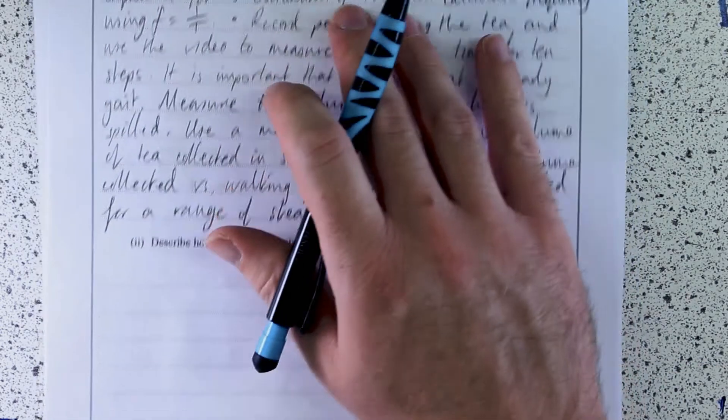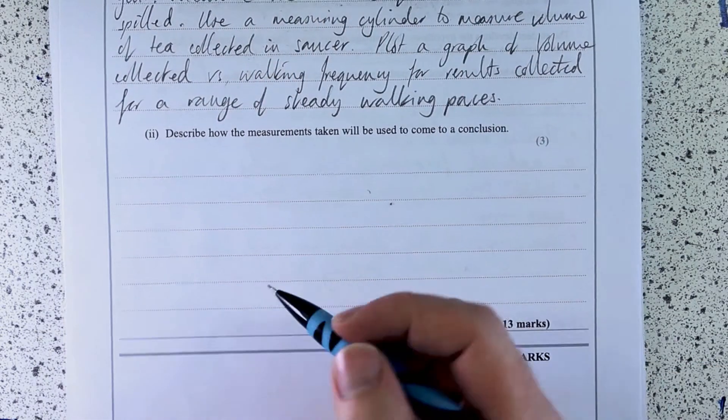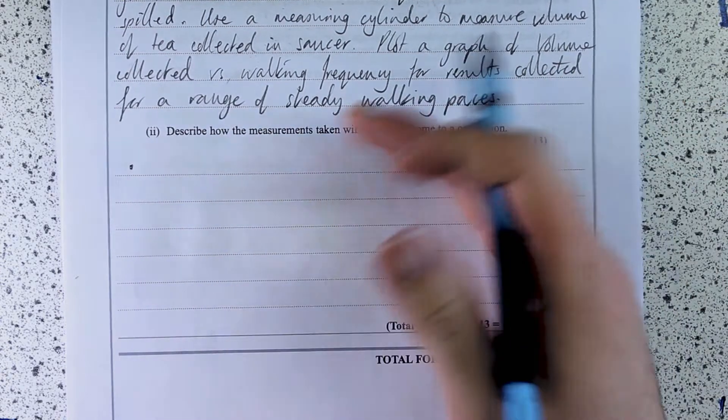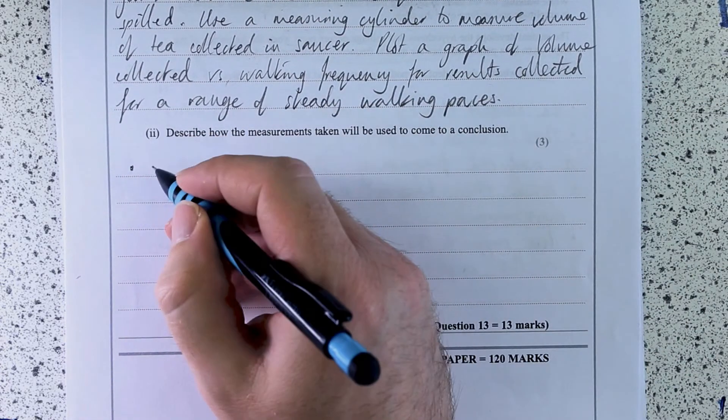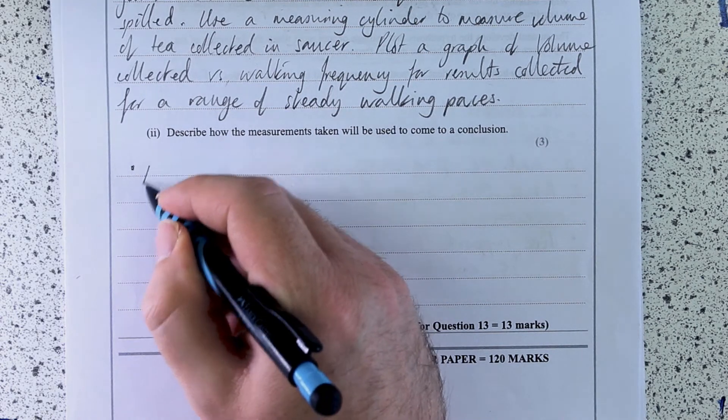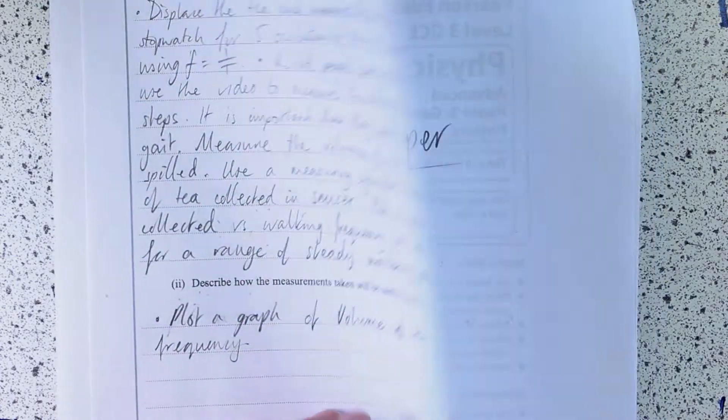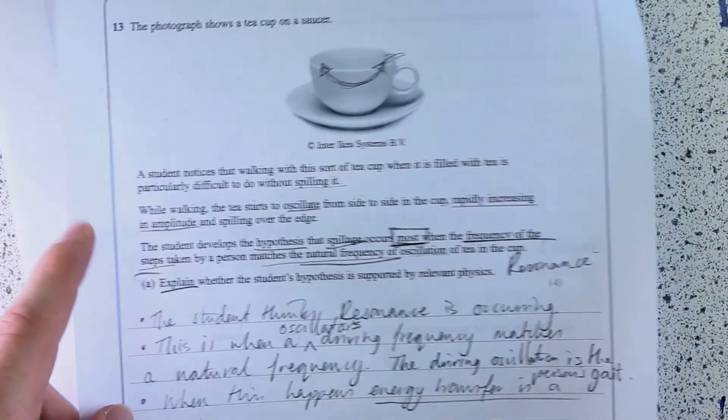Describe how the measurements taken will be used to come to a conclusion. So I've already said plot a graph of frequency against volume spilled. I could have also used the volume collected in the cup, but I didn't. So that's no problem.